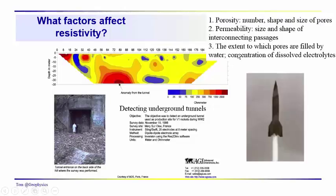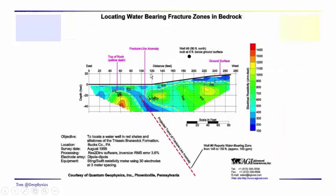If it's fresh water, it's going to have high resistivity and low conductivity. If it has a lot of dissolved electrolytes — in other words, if it's contaminated — then it's going to have very high conductivity and low resistivity. This is the duality between resistivity and conductivity methods. Here we're looking for a fresh water bearing aquifer, and the fresh water interval is showing up along what is interpreted to be a fracture zone within the bedrock in this area. It has the lowest resistivity.